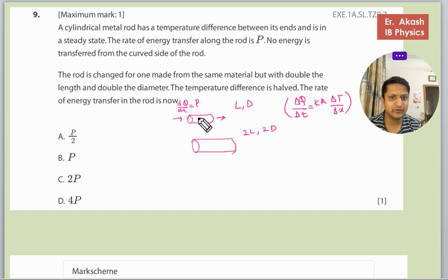We will put this formula for this rod and for the bigger rod. First calculate the cross section area. Area is pi R squared, R is D by 2 squared, so we can write it as pi D squared upon 4. And area for this cross section would be pi R squared, so 2D by 2, which is pi D squared.